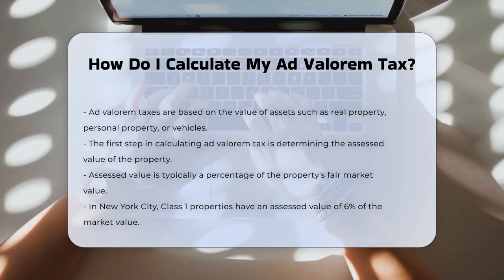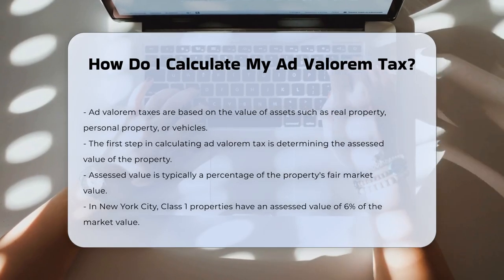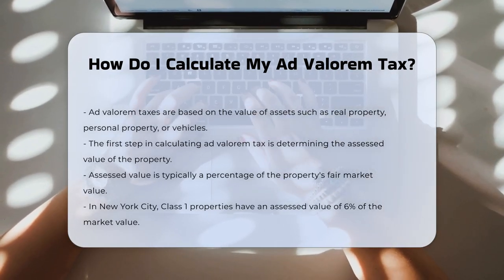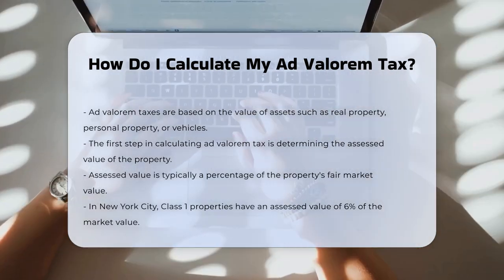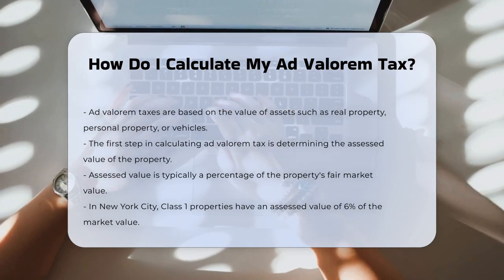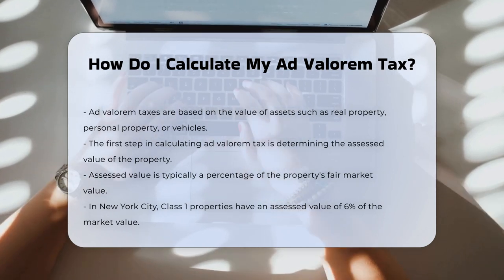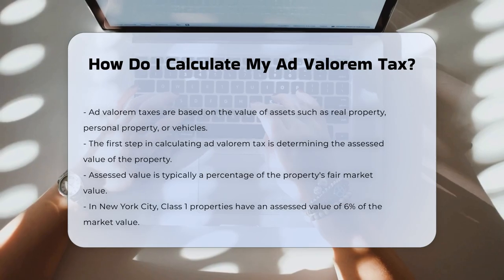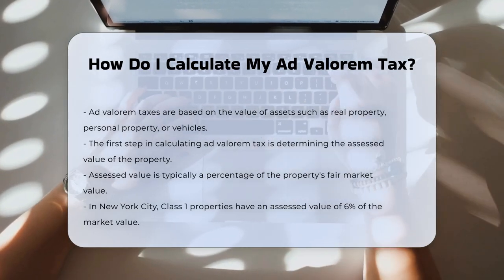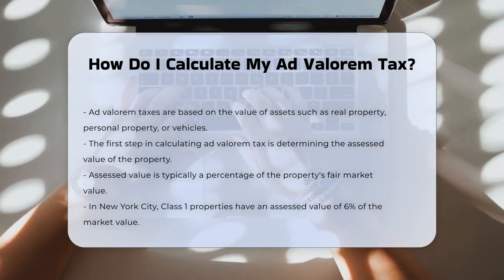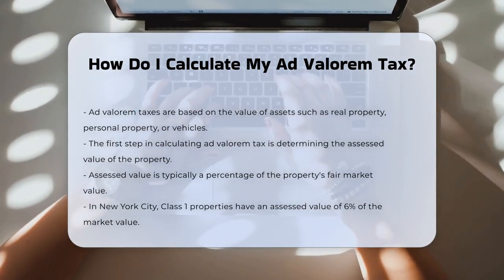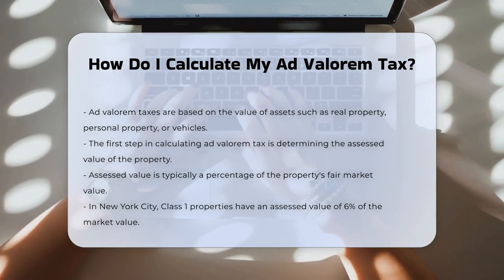Step one: Determining the assessed value. The first step in calculating ad valorem tax is to determine the assessed value of the property. This value is typically a percentage of the property's fair market value. For example, in New York City, the assessed value for Class I properties — residential properties with up to three units — is 6% of the market value.